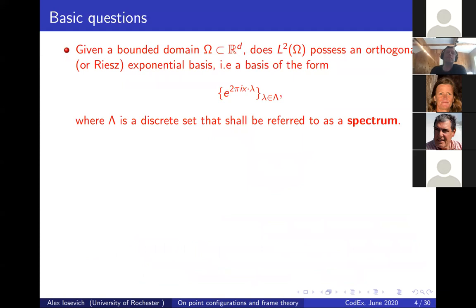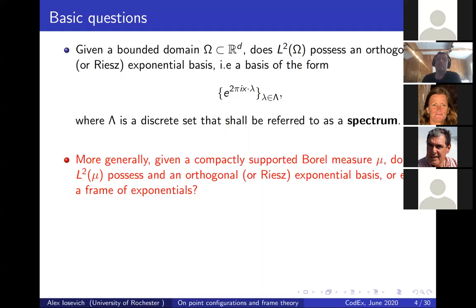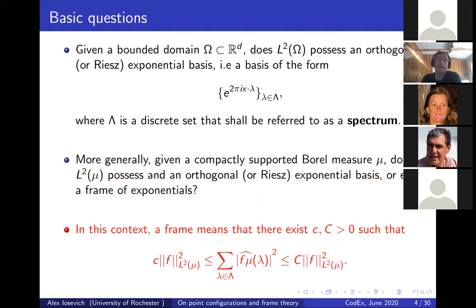Some basic questions: given a bounded domain omega in R^d, does L^2(omega) possess an orthogonal or Riesz exponential basis — a basis of the form e^{2πi x·λ} where λ is in some set Λ, which we call a spectrum? More generally, given a compactly supported Borel measure μ, does L^2(μ) possess an orthogonal or Riesz exponential basis, or a frame of exponentials? A frame means there exist positive constants c and C so that the sum of Fourier coefficients squared is bounded above and below by constant multiples of the L^2 norm squared.